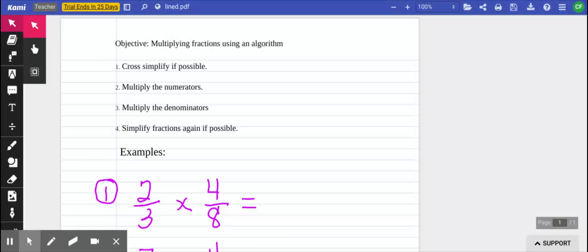First things first, we're going to review the procedure. Step one says that you should cross simplify if possible. We'll talk a little bit more about cross simplifying later on. Step two says multiply the numerators. Step three, multiply the denominators.